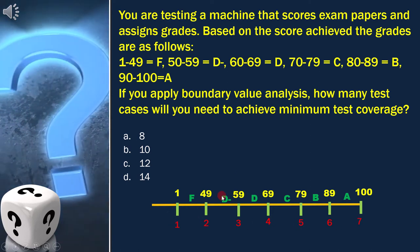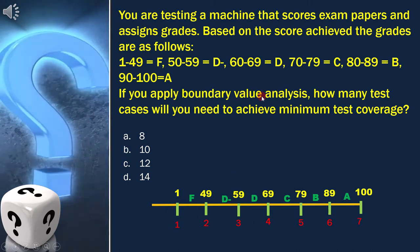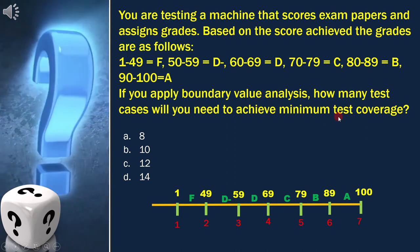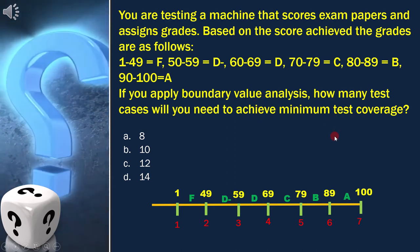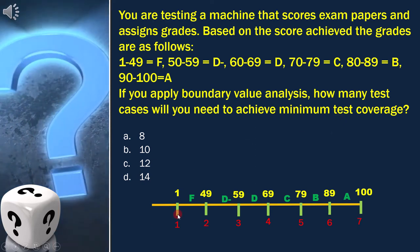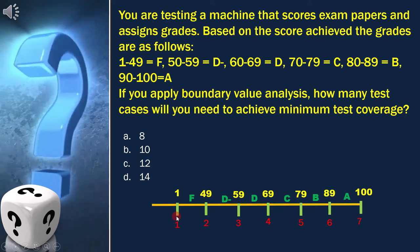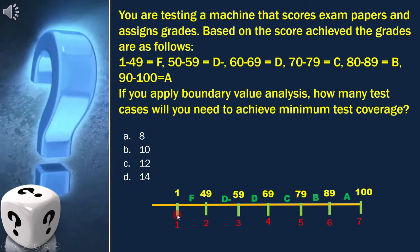Now as per the question, we have to find how many test cases will you need to achieve minimum test coverage. What we need to know here is to cover 1 boundary, we need 2 values. So, for 7 boundaries we need 14 test cases.